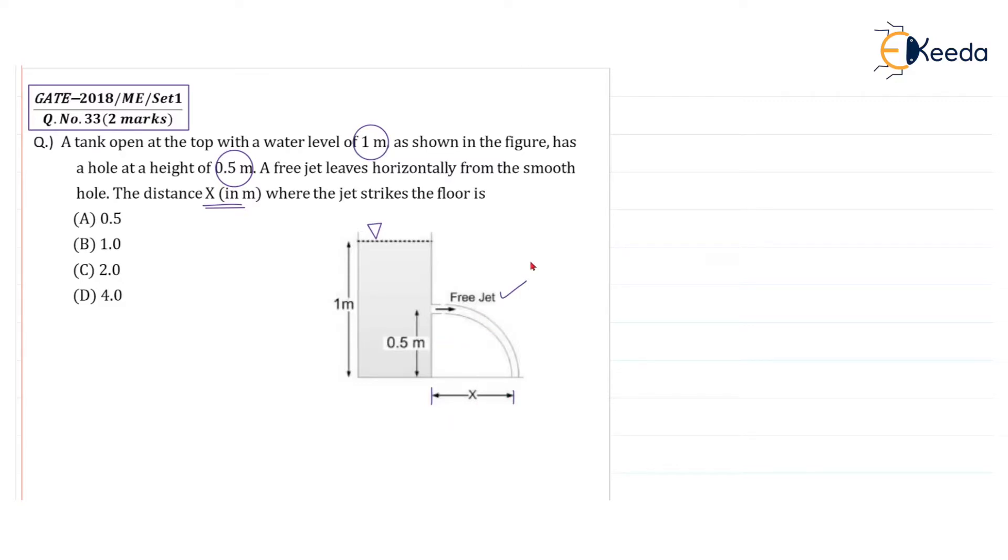So first of all, we will write down the velocity in x direction, y direction. So let us say velocity in x direction is ux. At this point, if I want to find the velocity in the x direction, we know that velocity is equal to root of 2gh, 2g into h. So 2 into 9.81 because it is a free surface. And 2 into 9.81 into h, so h value is 0.5 here. So I am getting ux equal to 3.13 meter per second.